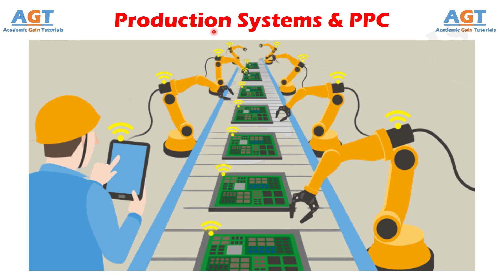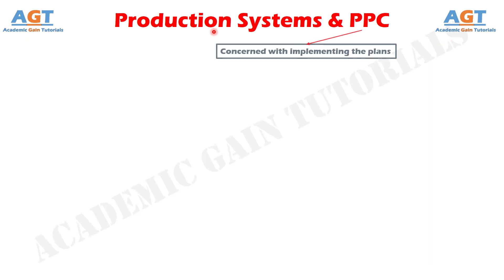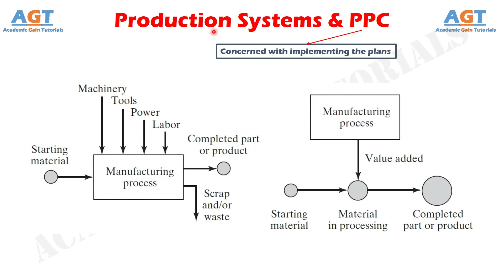Production is an organized activity of converting raw materials into useful products. Production system requires the optimal utilization of natural resources like men, money, machine, materials, and time. Production planning and control coordinates with different departments, such as production, marketing, logistics, warehouse, and other departments depending upon the nature of organization.